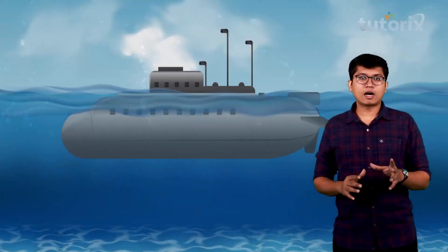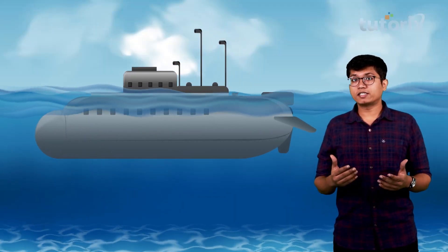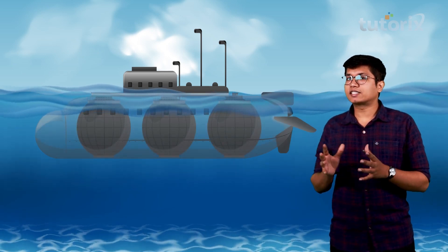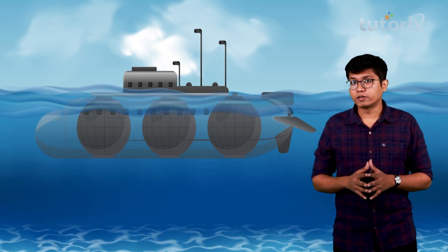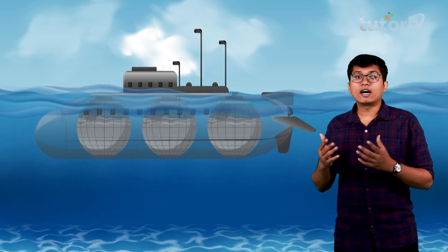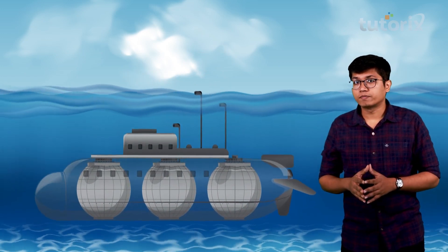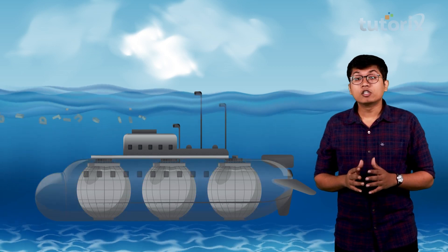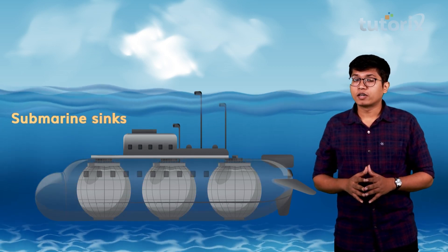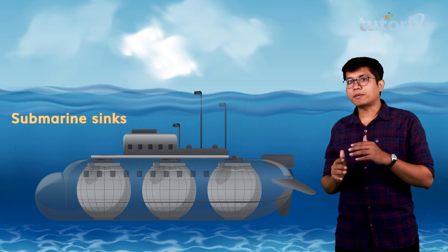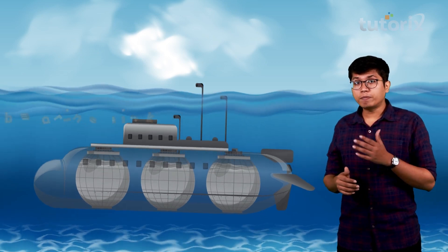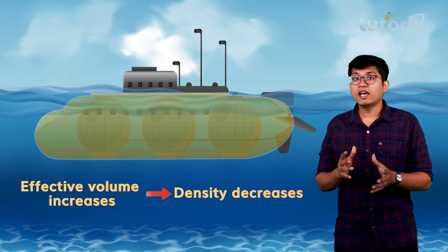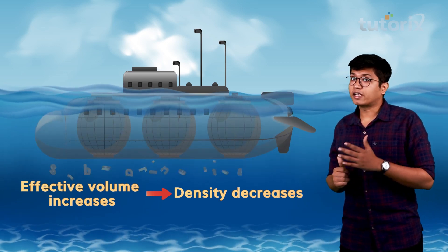A submarine is a very good example of how we can use variable densities to moderate buoyancy. A submarine has multiple reservoir tanks inside it that can hold or release water. When the submarine wants to sink, it allows water to flow into its reservoir tanks, reducing the effective volume and raising its effective density. When the submarine has to rise up to the surface, it uses pumps to pump this water out, increasing the effective volume and reducing its density so it can rise back up.